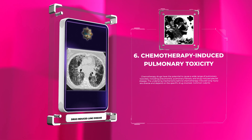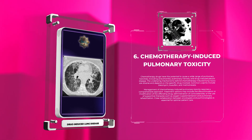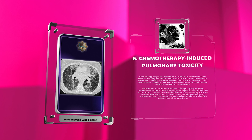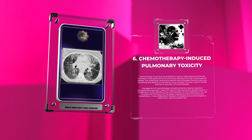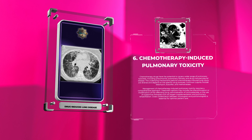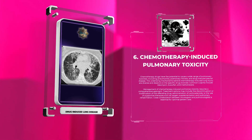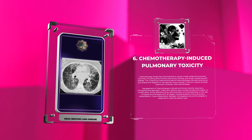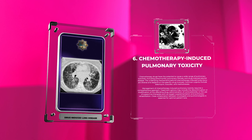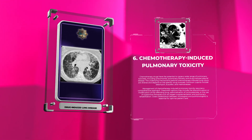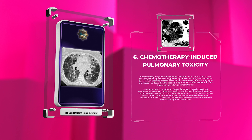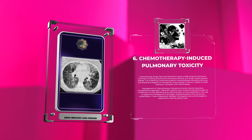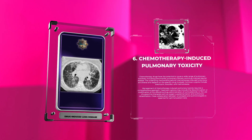Chemotherapy drugs have the potential to cause a wide range of pulmonary toxicities, including pneumonitis, pulmonary fibrosis, and drug-induced pleural disease. The underlying mechanisms behind chemotherapy-induced lung injury are diverse and depend on the specific drug involved. Common culprits include bleomycin, busulfan, and methotrexate. Management requires a comprehensive approach; treatment options may include discontinuation or modification of the offending drug, administration of corticosteroids, or the use of supportive therapies such as oxygen supplementation and pulmonary rehabilitation. Close collaboration between oncologists and pulmonologists is essential for optimal patient care.